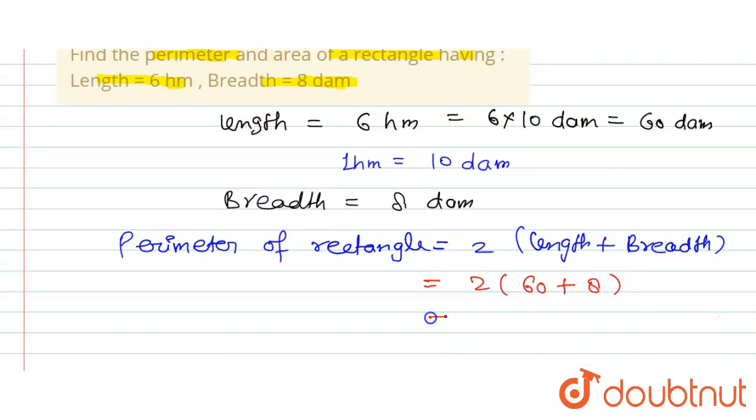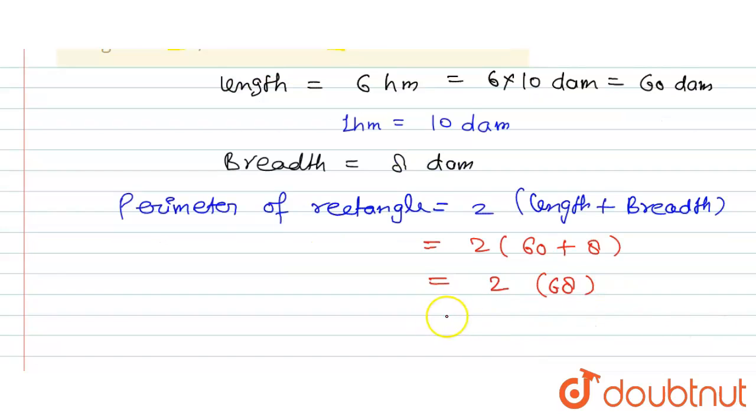So this is going to be equal to 2 times 68. So this is going to be equal to 138 decameter. Perimeter—sorry, this is 136 decameter.